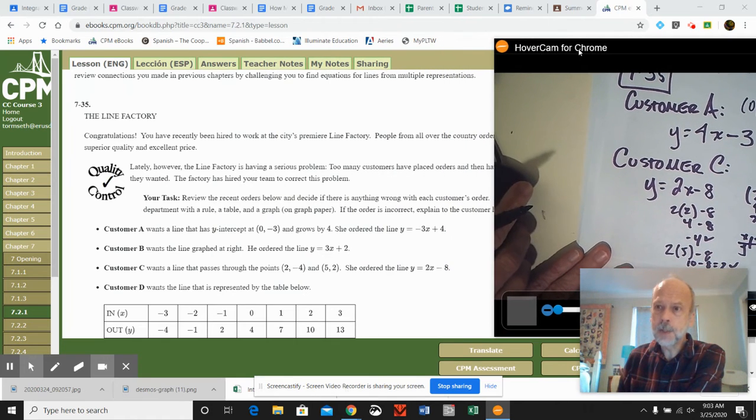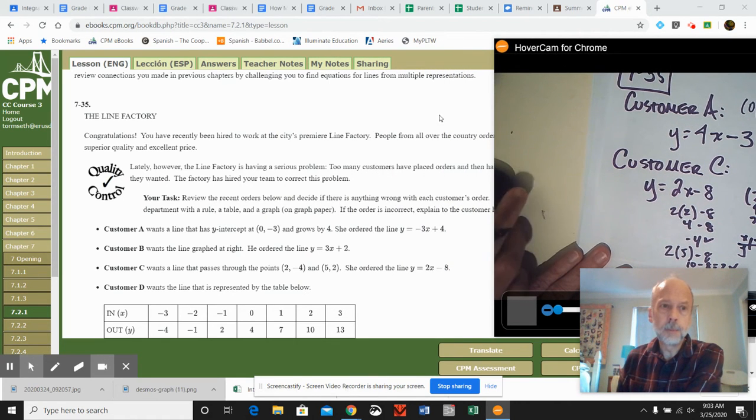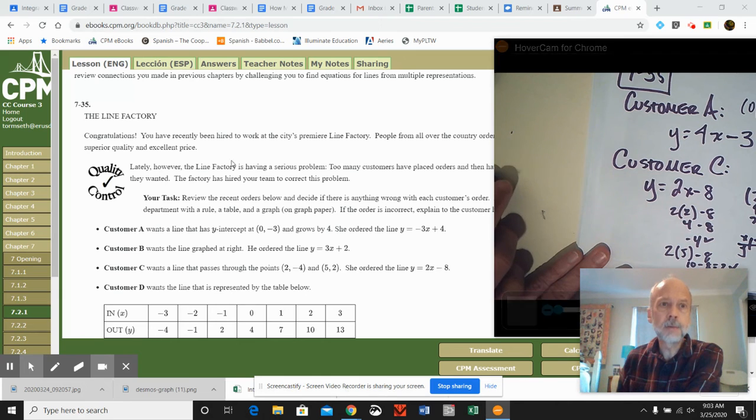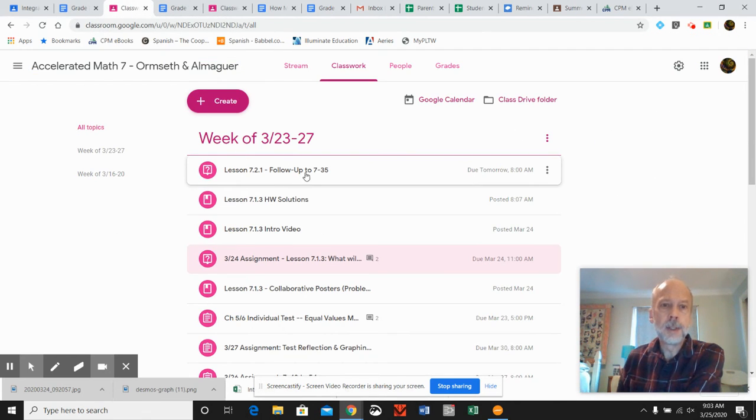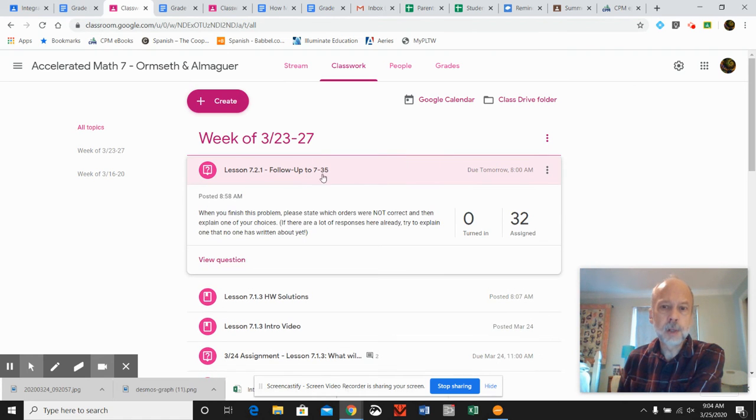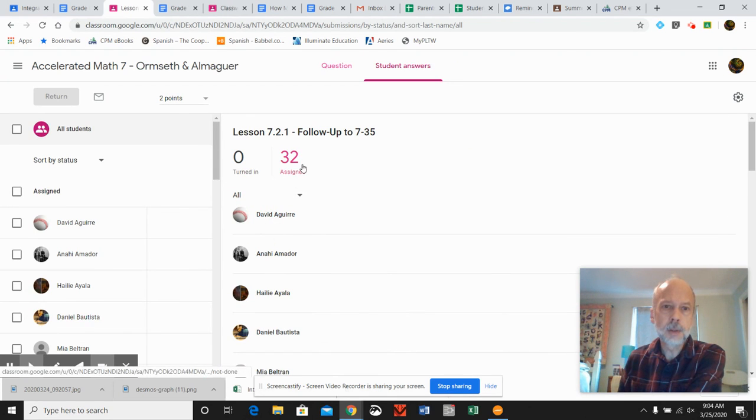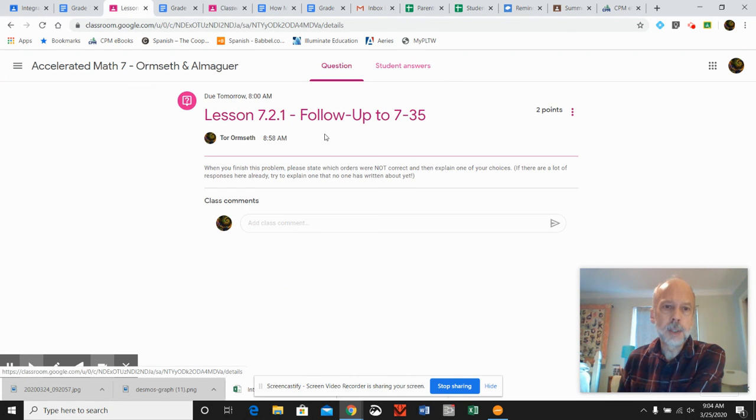The only other thing I'm asking you to do today, that's our main problem 35. Once you have your answers to that, please go back to Google Classroom. What I'd like you to do is, when you're done, explain which ones you think are not correct. Like we've seen that A is not correct. And just pick one of those customer orders and briefly explain why it was an incorrect order.